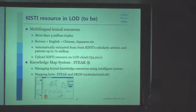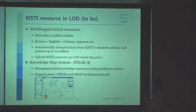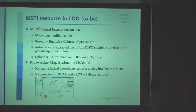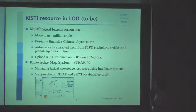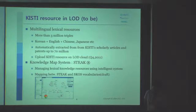We are preparing another resource. It is a considerable multilingual lexical resource including more than several million people. It is composed of Korean, English, Chinese, and Japanese multilingual word pairs. It was automatically extracted from KST's discovery articles and amounts to up to 70 million entries. It will be completed soon and uploaded to the LOD cloud this winter.